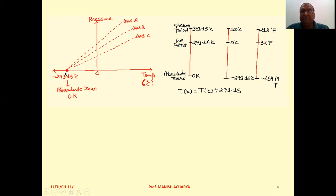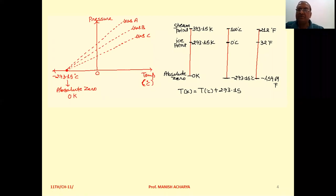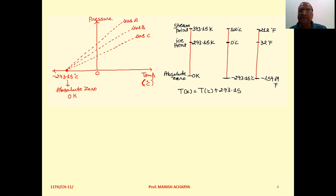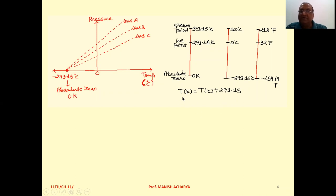This is the temperature at which, for all gases, the pressure becomes zero. This particular temperature is called absolute zero temperature, and it is considered as zero on the Kelvin scale, which was developed by Lord Kelvin. The relationship between Kelvin and degree Celsius is: T(K) = T(°C) + 273.15.